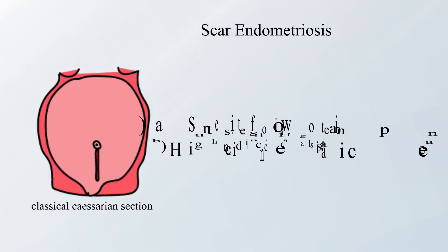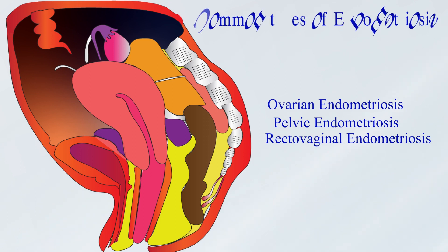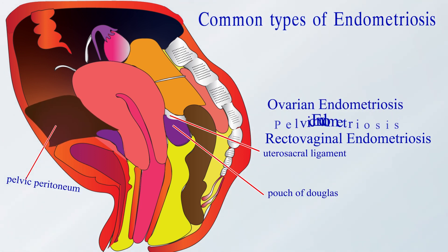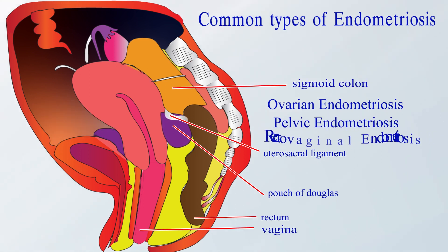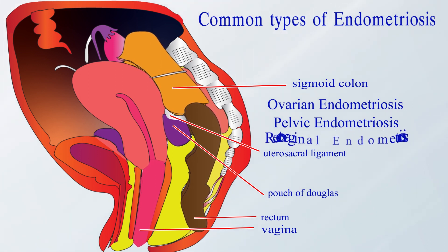Scar endometriosis is seen at sites following an operation, with high incidence in classical caesarean section. Common types of endometriosis are: ovarian endometriosis or chocolate cyst of the ovaries; pelvic endometriosis involving pelvic peritoneum, pouch of Douglas, and utero-sacral ligaments; and recto-vaginal endometriosis involving utero-sacral ligaments, posterior fornix of vagina, anterior wall of rectum, and sigmoid colon.